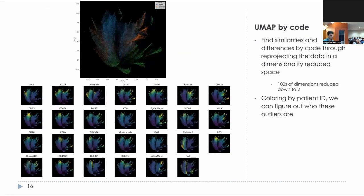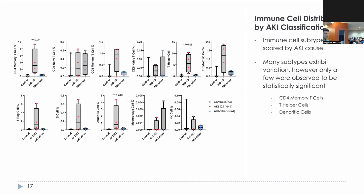As a means of visualizing heterogeneity, we can employ dimensionality reduction techniques such as UMAP to project all cells in our dataset into a reduced dimensionality space. Cells can be colored by categorical supplementary patient information such as the cause of AKI, or by marker intensity values. Tying this back to the original study, we scored our samples for a variety of immune cell subtypes, identifying those with differential scoring for one AKI classification relative to others. CD4 memory T cells, T helper cells, and dendritic cells were among those observed to be statistically significant.